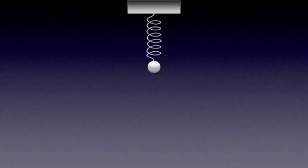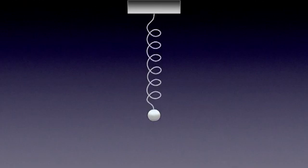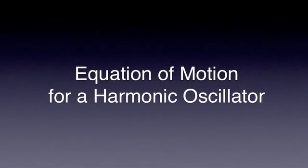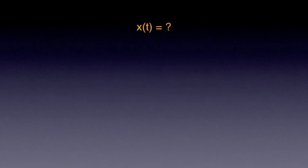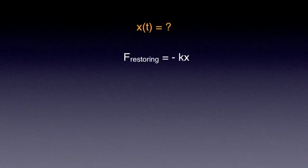The question is: what is the equation of motion for this harmonic oscillator? What we want to find out is how the displacement of this harmonic oscillator varies with time — x as a function of time. Earlier, we found that the resultant, also called the restoring force, is minus kx.